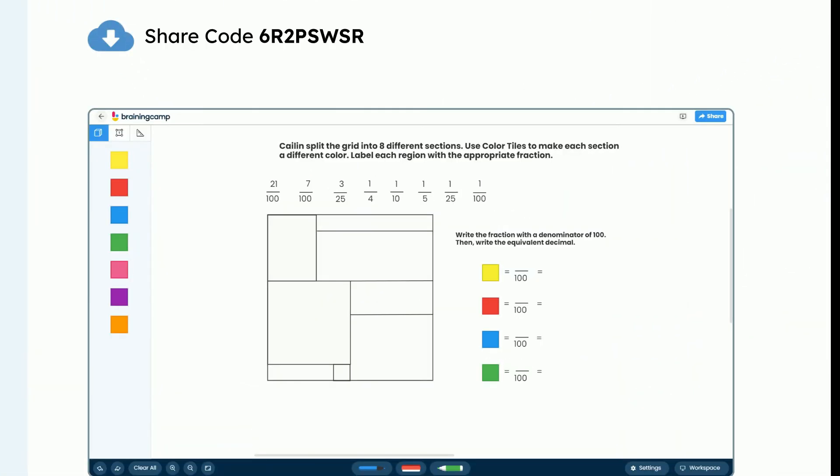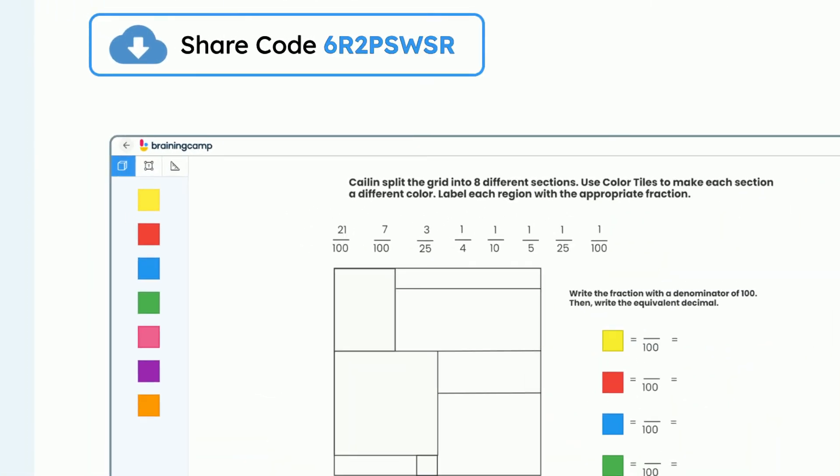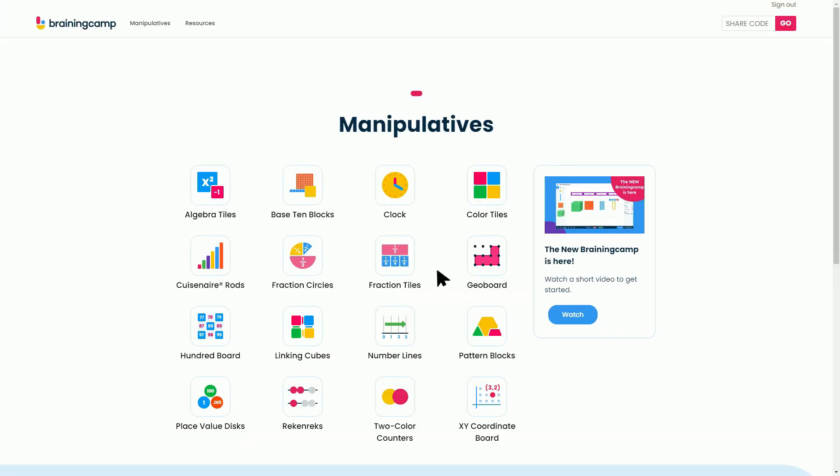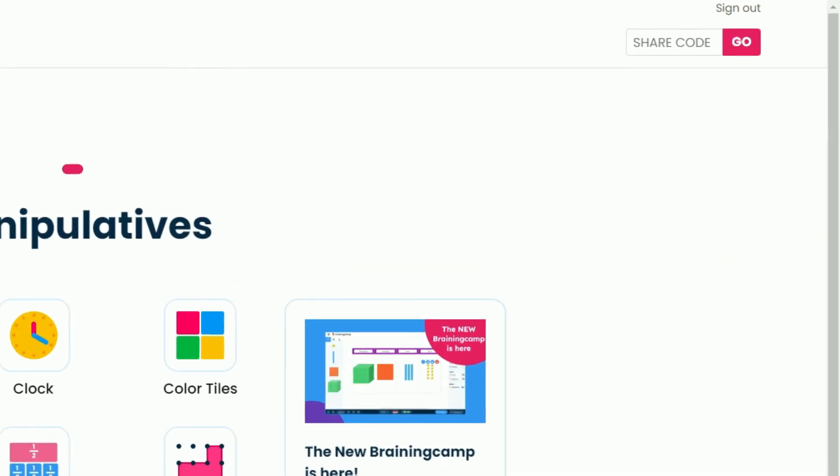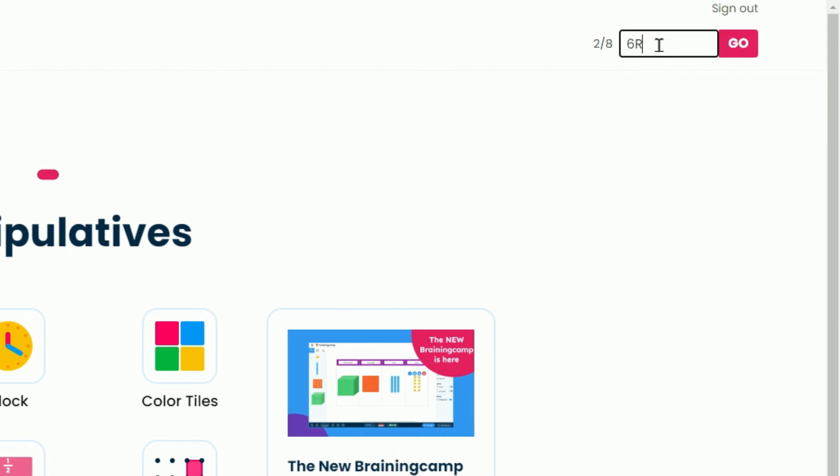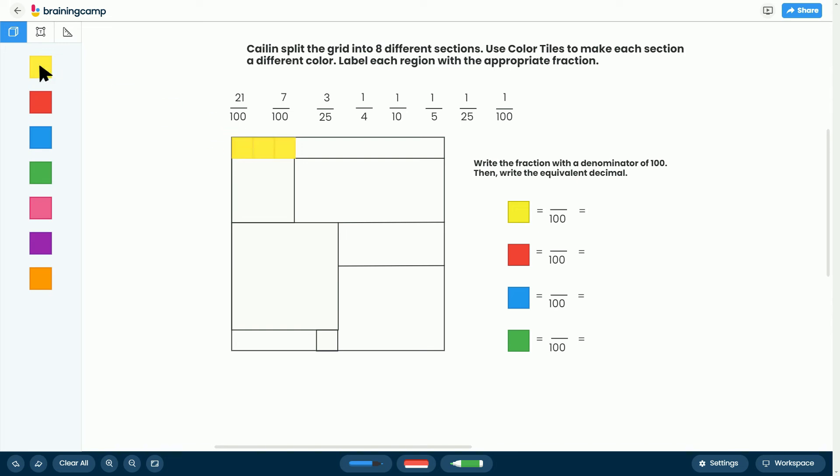Student access is fast and easy. Simply provide students with the share code. Students then enter the share code into the share code box and click go. It's that simple for them to begin to explore.